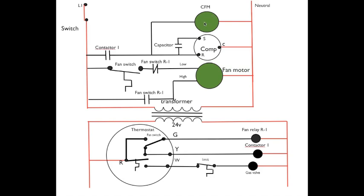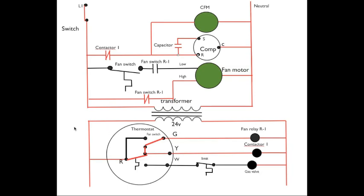So let's see how this one's going to sequence out on a call for cool. Beginning in the low voltage down here at the thermostat, power passes through R through the now closed cooling thermostat. It closes on a rise in temperature, up through the fan auto position, through G to energize fan relay R1 up in the high voltage fan switch.